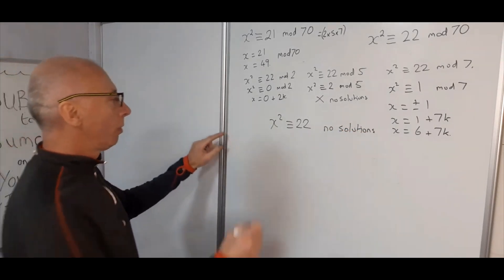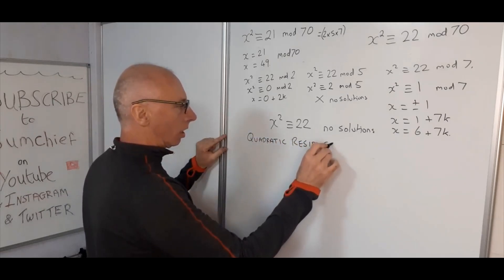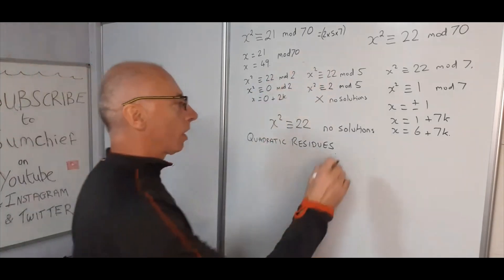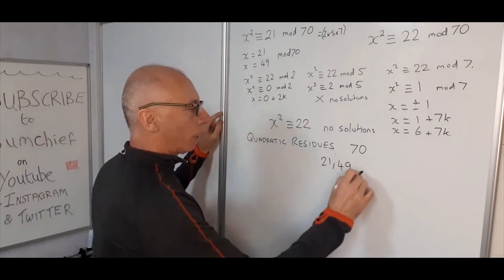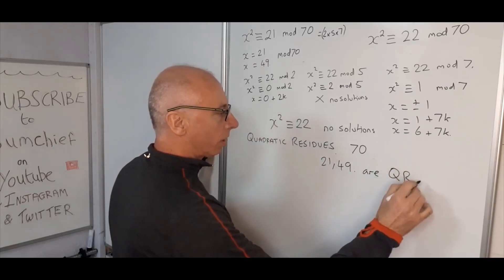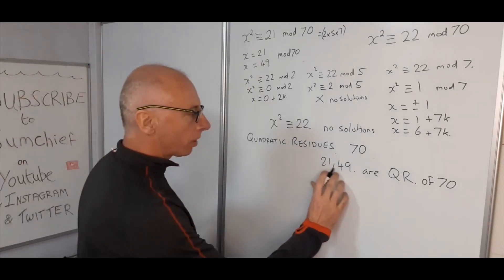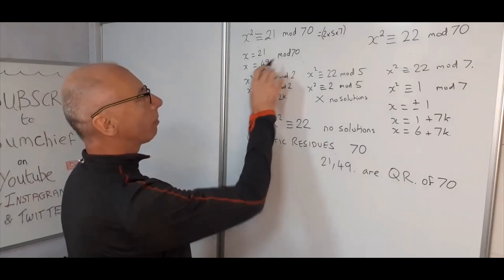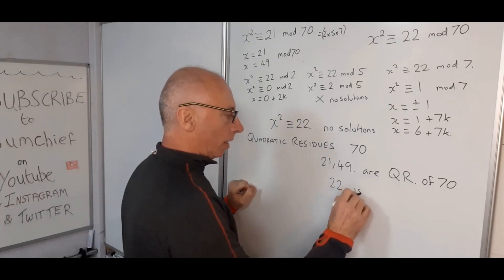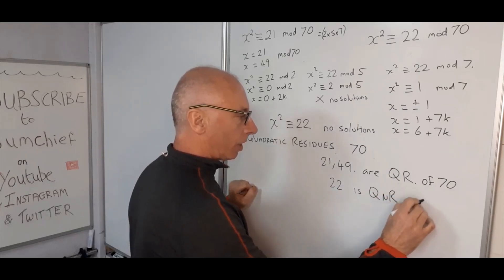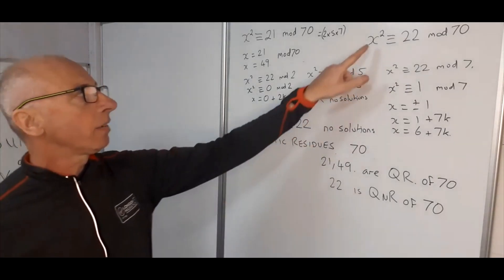In conclusion, for n equals 70, we can say that 21 and 49 are quadratic residues of 70. Notice they add up to 70, consistent with the minus relationship. On the other hand, 22 is a quadratic non-residue of 70, meaning x squared congruent with 22 mod 70 does not yield a solution for any value of x.